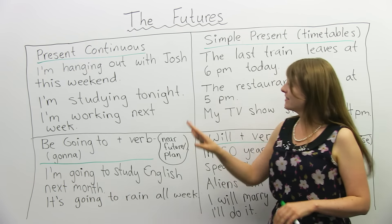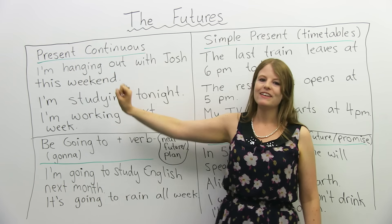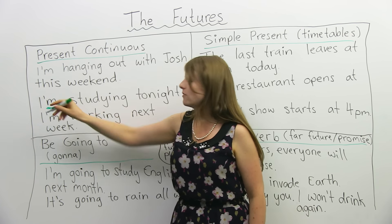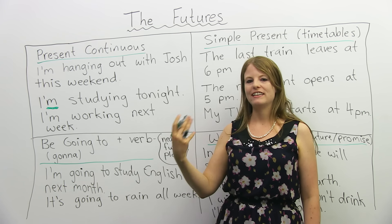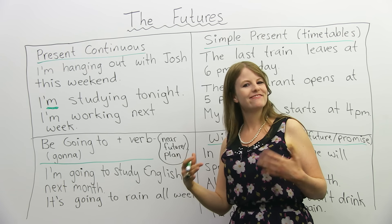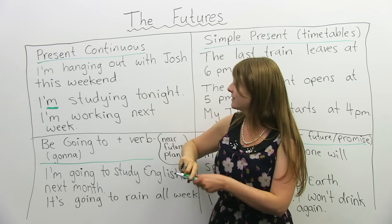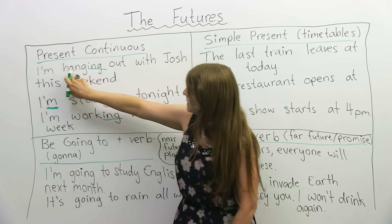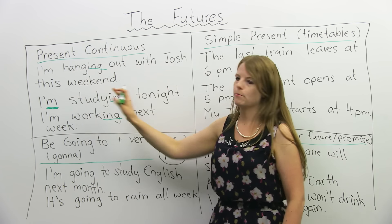Let's get started with the present continuous future. The present continuous is when you have a be verb — so I am, you are, he is, she is, they are, we are — plus the verb and -ing. So we have am/is/are plus the verb plus -ing. This is known as the present continuous.